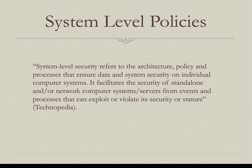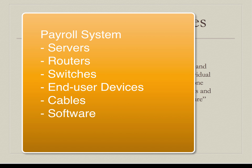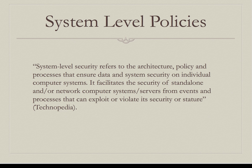System-level policies refer to the architecture and processes that ensure data and system security on each individual computer system. In this context, a computer system applies to all the devices and connectivity technology needed to support a business process — such as a financial or payroll system, including the servers, end-user devices, routers, switches, cabling, and everything that creates the system to support that business process. It facilitates the security of standalone or networked computer systems and servers from events and processes that can exploit or violate their security.